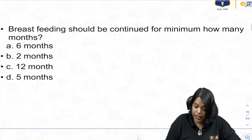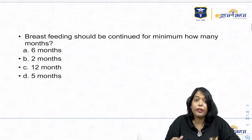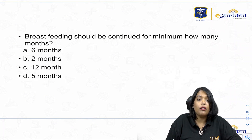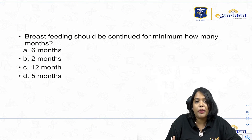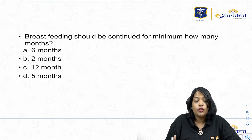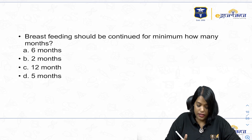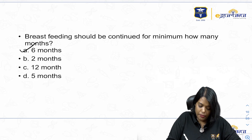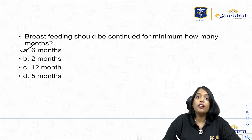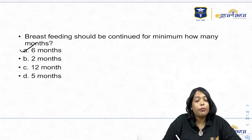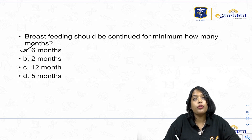Next question: breastfeeding should be continued for a minimum of how many months? Exclusive breastfeeding should be given up to 6 months, after which weaning begins and solid foods can be introduced to the baby.